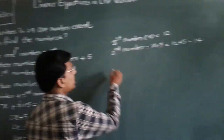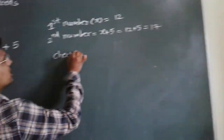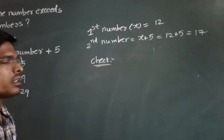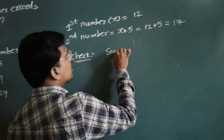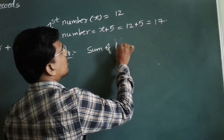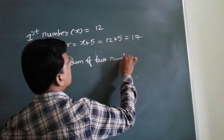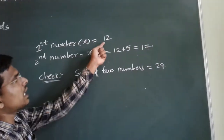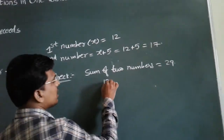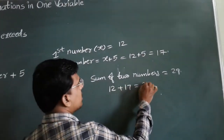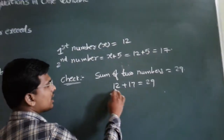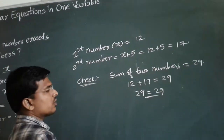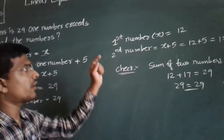Let's check if this is the correct answer. The question says the sum of 2 numbers equals 29. We got the two numbers as 12 and 17. Adding: 12 plus 17 equals 29. Yes, we get 29, which equals 29, so our answer is correct.